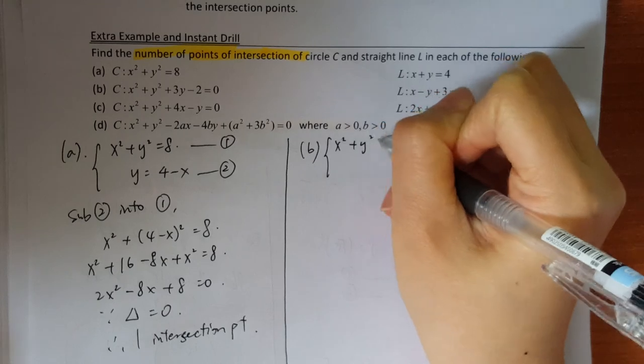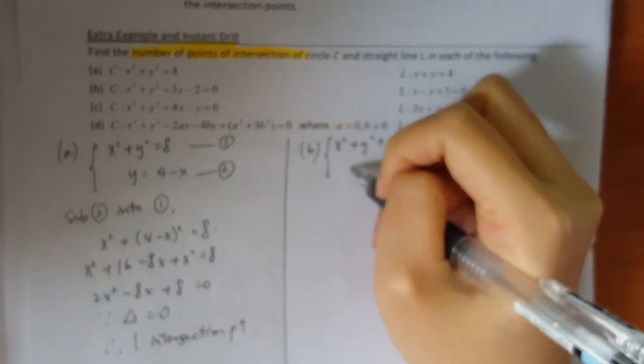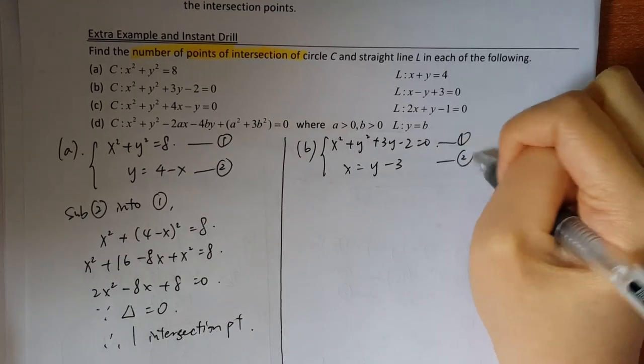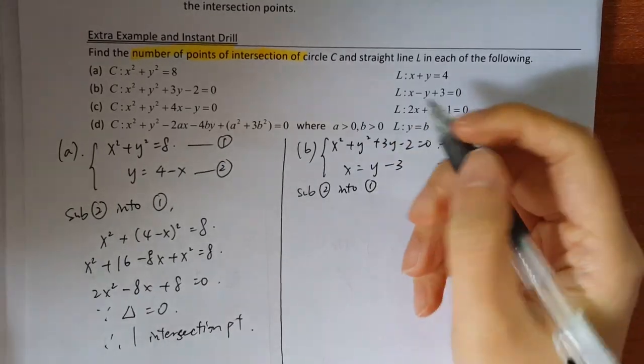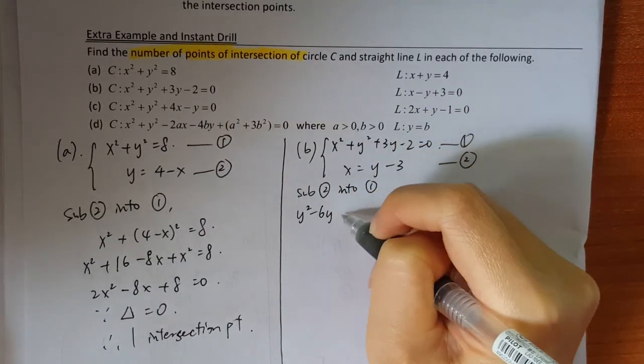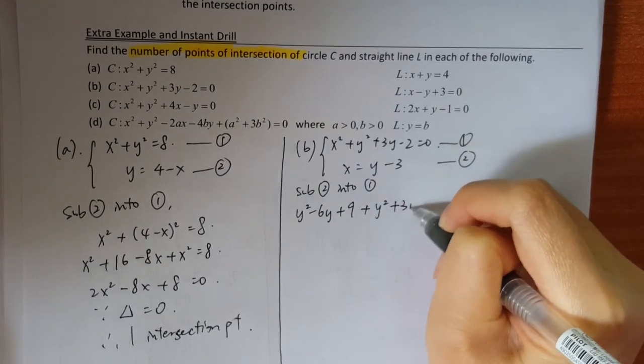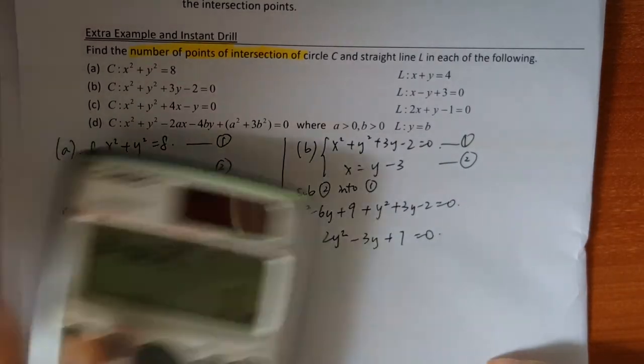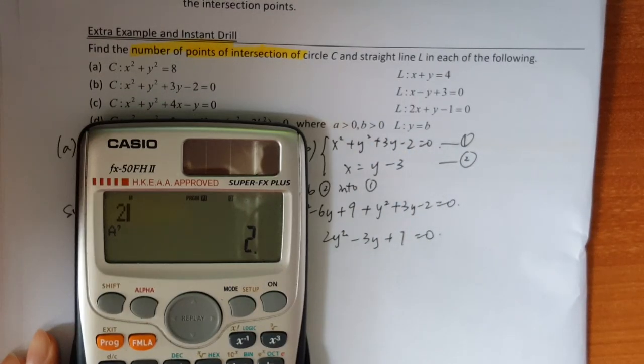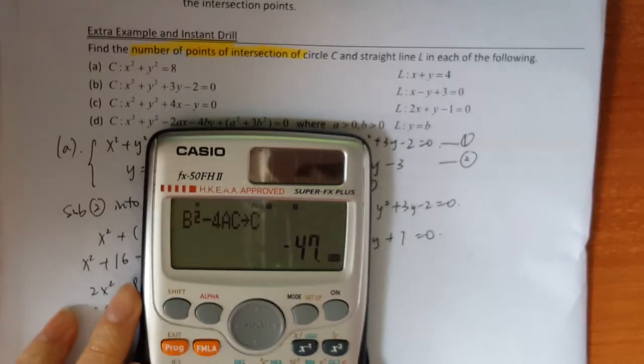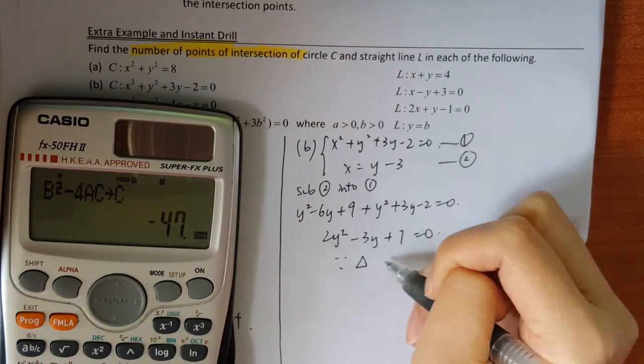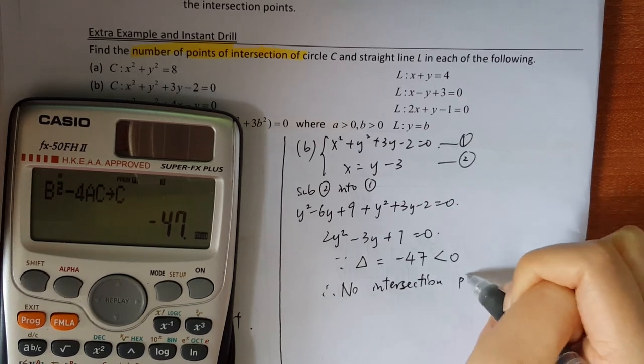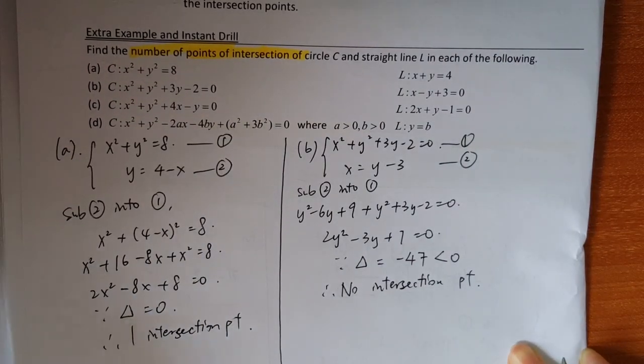And then part B. So once again, x squared plus y squared plus 3y minus 2 equals to 0. Another equation would be x equals to y minus 3. This one is the first one, this one is the second one. So once again, I have to sub 2 into 1. So would be 2y squared minus 3y plus 7 equals to 0. I have to use program 1, 2, negative 3, 7. The third output is negative 47, which is smaller than 0. Therefore, no intersection point.